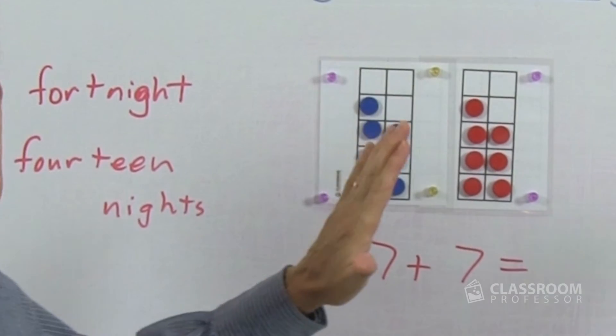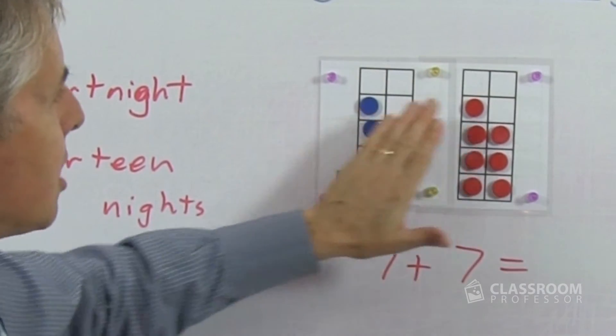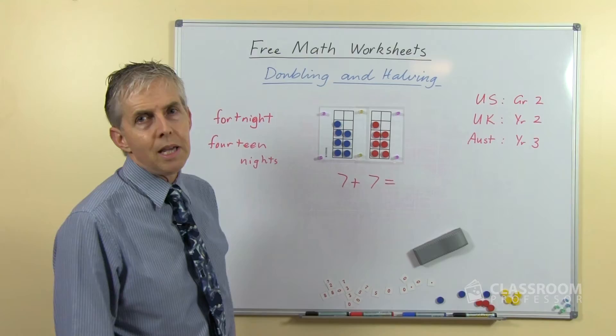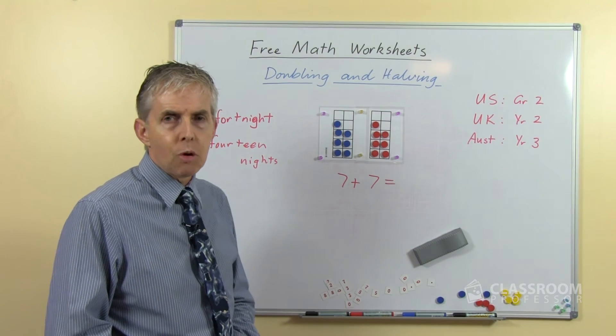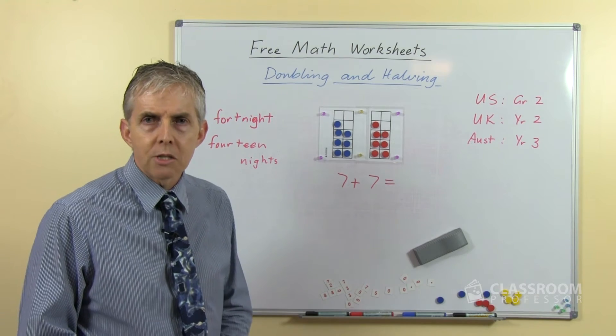So this is a much better thinking question. Here's seven, here's seven, what will this be if we add them all together to make one number? What will it look like? Can you imagine it in your mind?